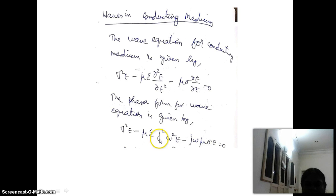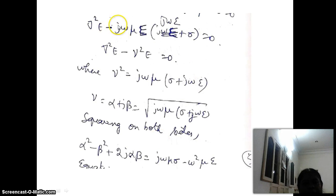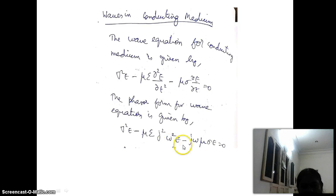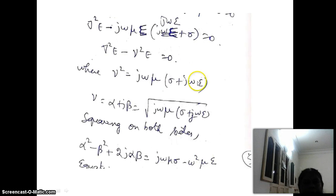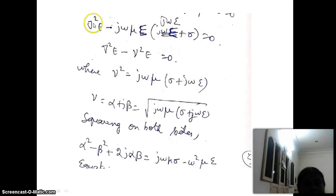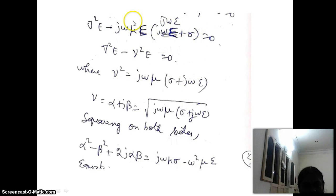Since j squared equals minus one, we have: del squared E minus j omega mu times (j omega epsilon plus sigma) equals zero. Taking j omega mu E outside, we get: del squared E minus j omega mu E times (sigma plus j omega epsilon) equals zero. This term can be written as gamma squared, so the equation becomes del squared E minus gamma squared E equals zero, where gamma squared equals j omega mu times (sigma plus j omega epsilon).